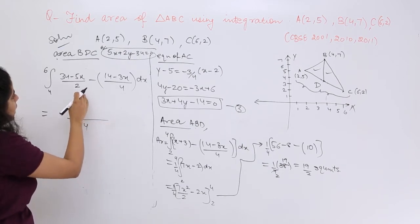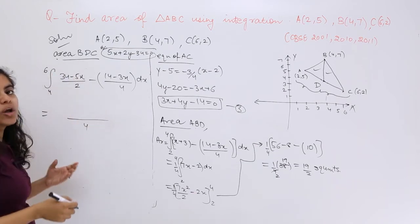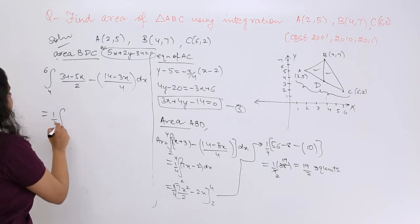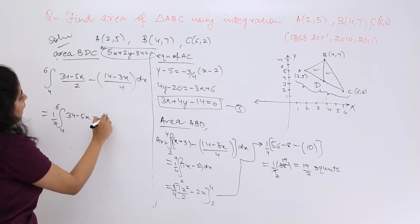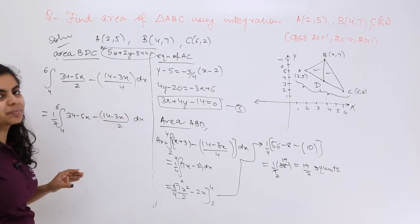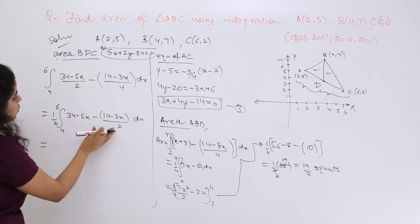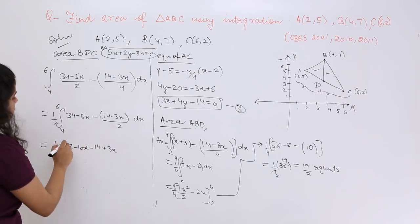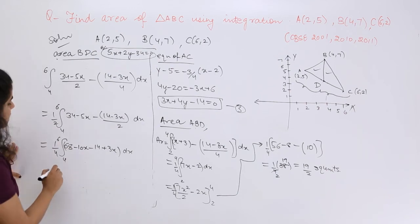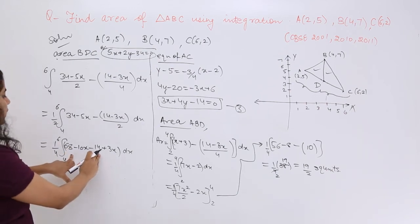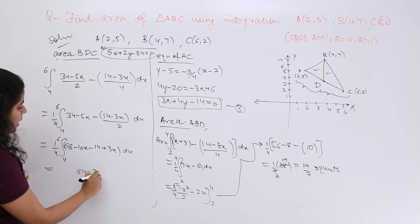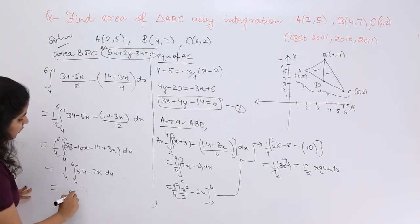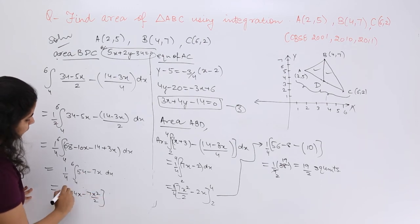Now here we see that we can take LCM. So let me take the LCM. It should be 4. Now if I take 1/2 common, what is left? My question is more simple. It's the integral from 4 to 6 of (34 - 5x - (14 - 3x)/2)dx. I can directly take it as LCM. So (68 - 10x - 14 + 3x)/4, and 1/4 becomes outside, right? So it is 4 to 6 dx. 68 - 14 is 54, and this should be -7x. So it should be 54x - 7x²/2 with limits from 4 to 6. 1/4 is already outside.